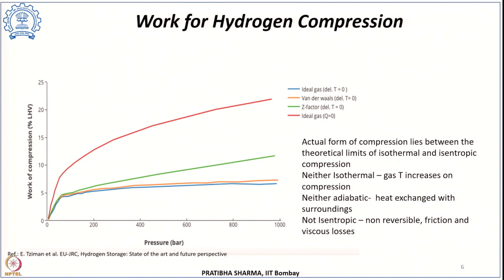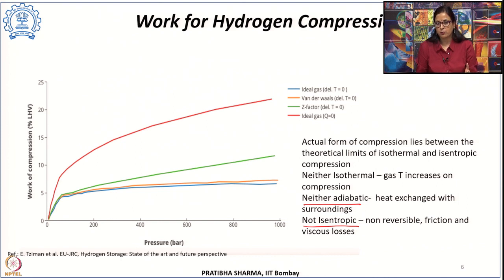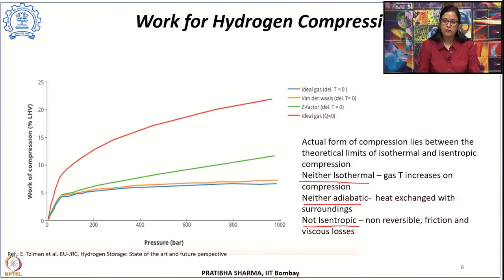Theoretically, the work required to compress hydrogen in an isothermal process is minimum and in an isentropic process it is maximum. The actual work of compression lies between these two theoretical limits. The actual process is neither isothermal — because temperature increases on compression — nor adiabatic — because there is heat exchange with surroundings — nor isentropic — because the actual process is non-reversible, with losses from friction and viscous effects. Some researchers have modelled the actual process as a polytropic process.